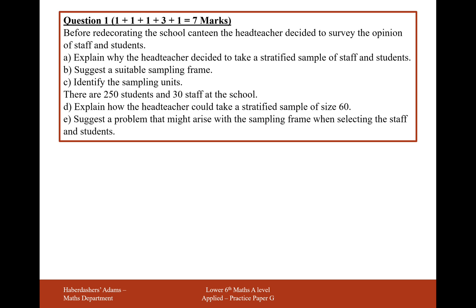There are 250 students and 30 staff at the school. Explain how the headteacher could take a stratified sample of 60. For the students, he's going to want a fraction of 250 out of 280 of these 60 to be students. Getting your calculator out and doing 250 divided by 280 — that's the proportion we want — of the 60 people, that gives us 53.57, which approximates to 54 students.